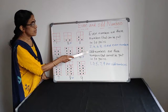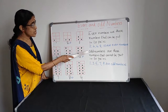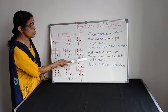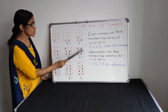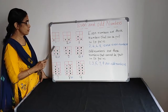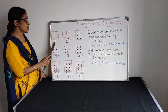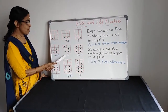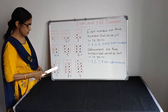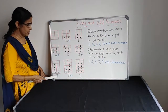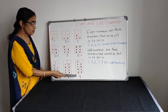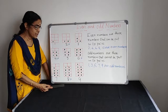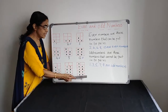Odd numbers are those numbers that cannot be put into pairs. Closely observe: one, three, five, seven, nine. The next odd number is eleven.